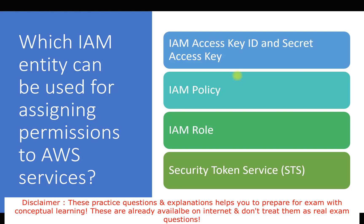IAM access key ID and secret access key are assigned to IAM users and used for programmatic access via API or CLI — not for assigning permissions. IAM policy is a policy document used to define what type of permissions can be applied to users, groups, or roles — but it is not the entity used to assign permissions to services.